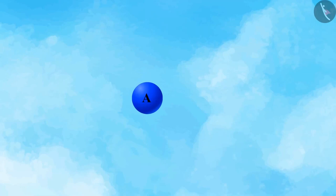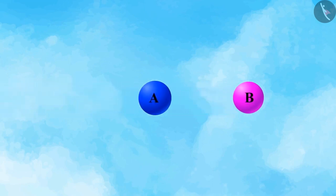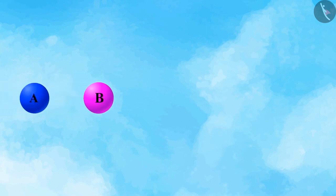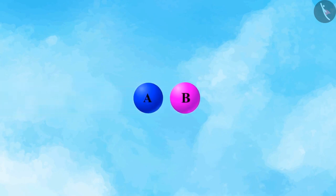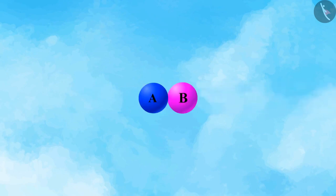Consider two balls A and B having masses MA and MB such that they are travelling in the same direction along a straight line with velocities Ua and Ub respectively. Also, let us suppose that no external force is acting on these two balls. Let the velocity of ball A be greater than the velocity of ball B such that the two balls collide with each other after some time, during the time of collision which lasts for a time period T.